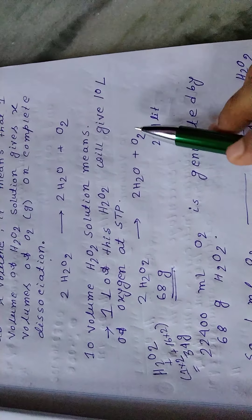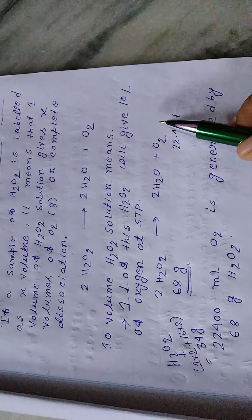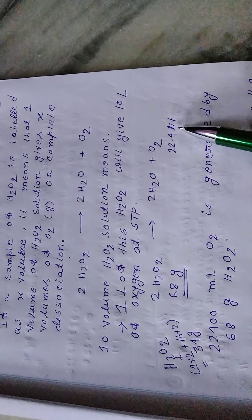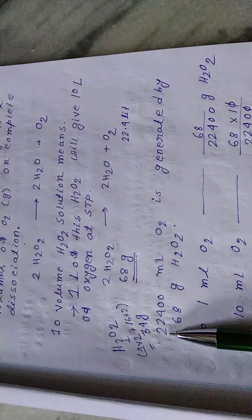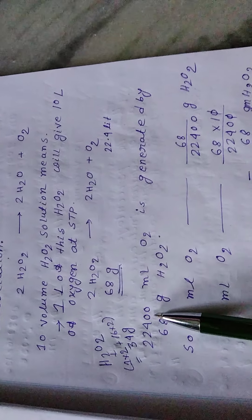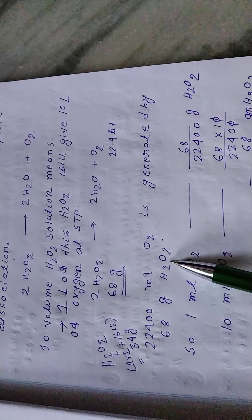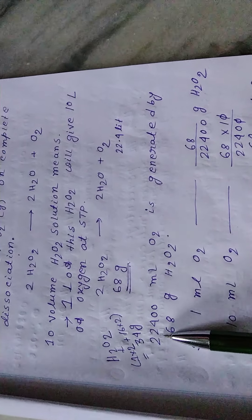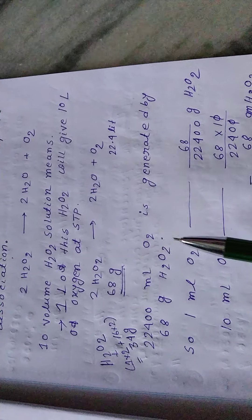And for oxygen: 1 mol of oxygen, its molecular weight is 2×16 = 32 gram. In volume, 1 mol O2 at STP has a volume of 22.4 liter, that is 22,400 mL. So 22,400 mL of O2 is generated by 68 gram H2O2 decomposition.